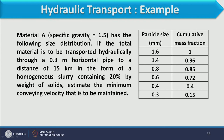Now we have one example. Material A of specific gravity 1.5 has a given size distribution. The total material is to be transported hydraulically through a 0.3 meter diameter horizontal pipe to a distance of 15 km in the form of homogeneous slurry containing 20 percent by weight of solid. Estimate the minimum conveying velocity to be maintained. Let us start the computation of minimum conveying velocity in the hydraulic system.